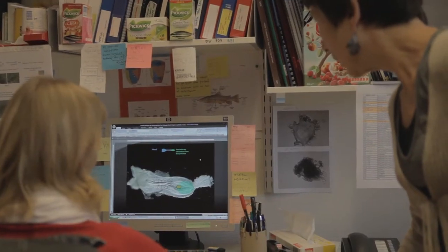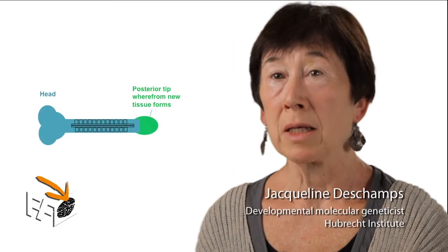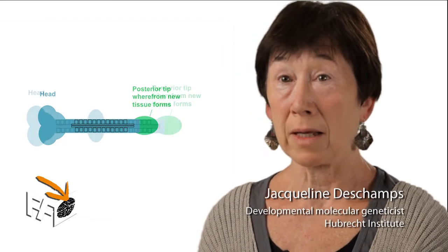In vertebrates, including us, the head is formed first and the rest of the body is added later, little by little. It is this construction of the embryonic body that we want to understand: how tissues are formed and get their appropriate shape.